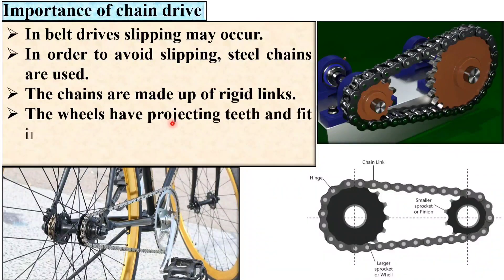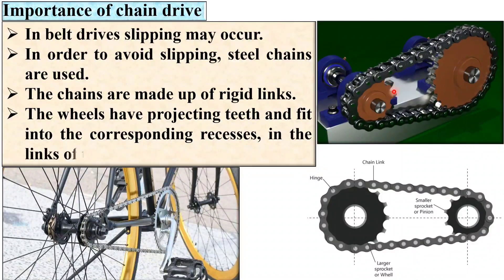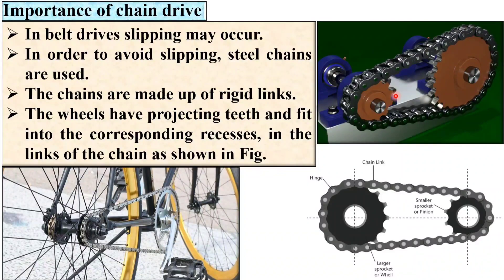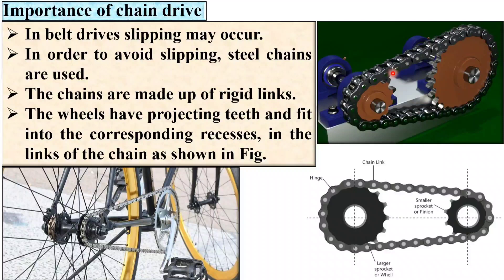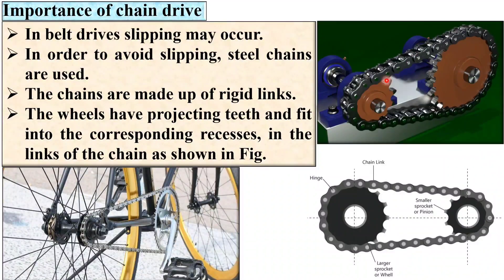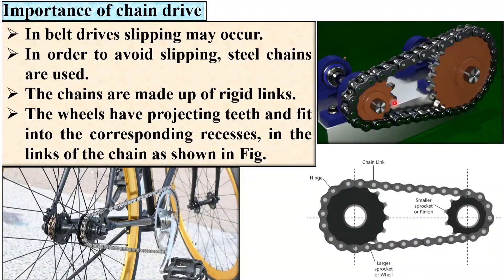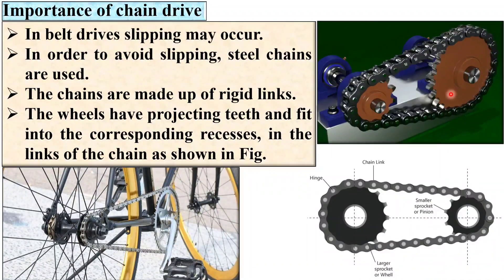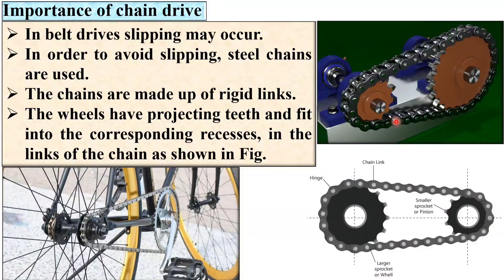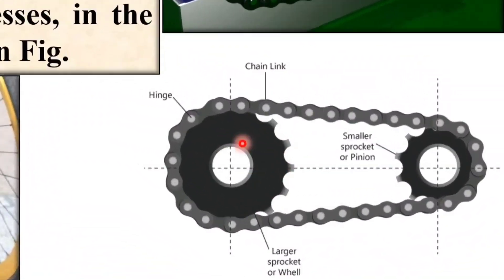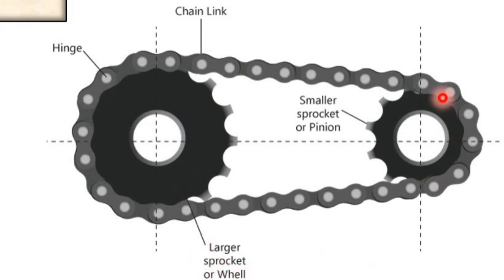The wheels have projecting teeth. Here you can see this wheel having the projecting teeth that fit into the corresponding recess in the links of the chain. This wheel having projecting teeth is known as the sprocket. Here you can see this one is the larger sprocket and this one is the smaller sprocket. Generally, the smaller sprocket is known as the pinion and large sprocket is known as the wheel.